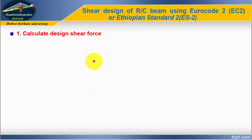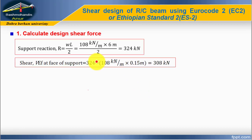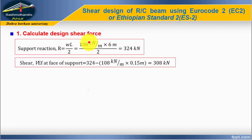Step number one: calculate the design shear force. The support reaction equals WL/2 for a simply supported beam. W is the ultimate uniformly distributed load and L is 6 m, so the support reaction equals 108 × 6 / 2 = 324 kN.